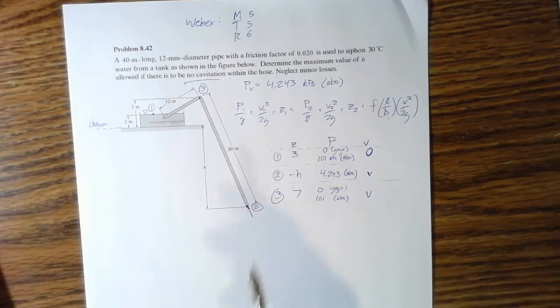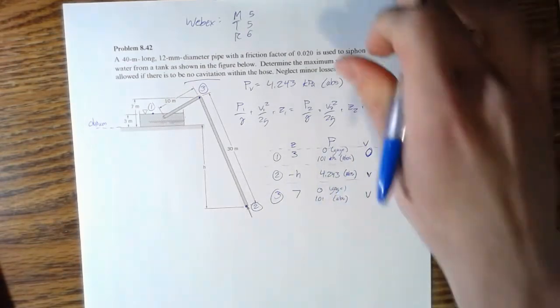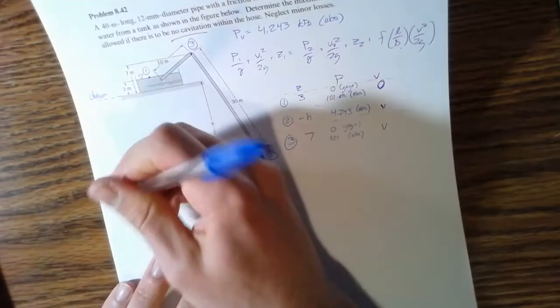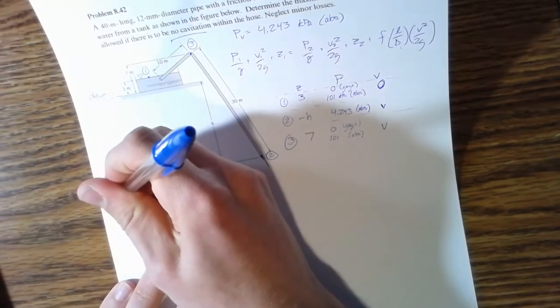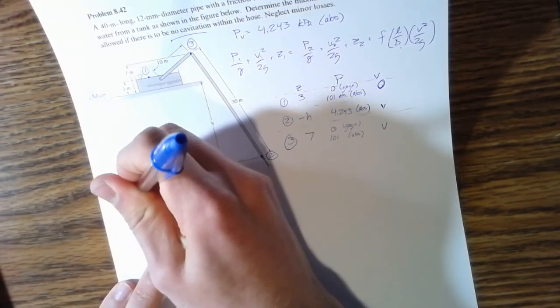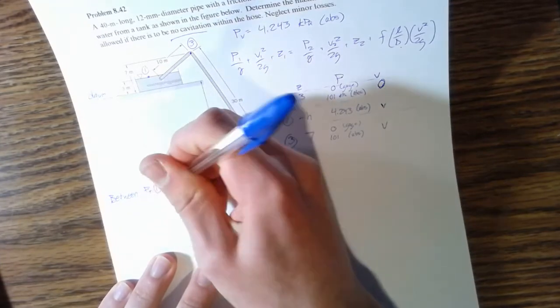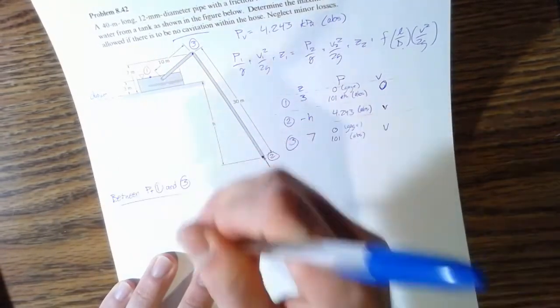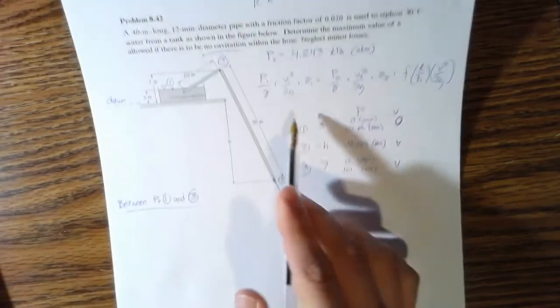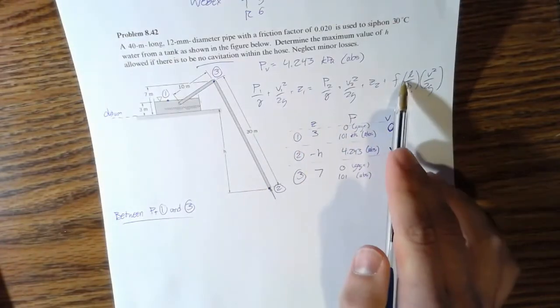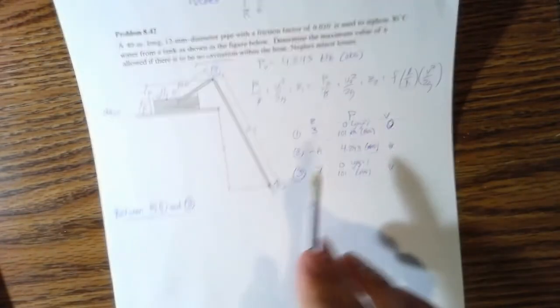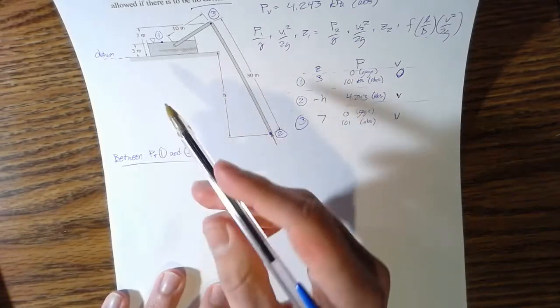We have our points and we're going to start relating things. First, between point 1 and 3. Just reference back to this equation here, I'm just going to plug numbers in as we go.